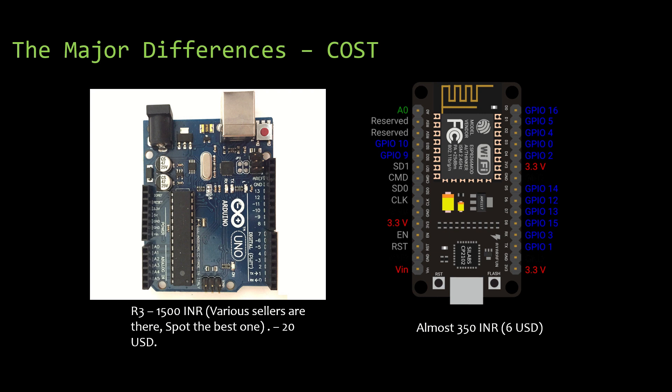The final difference is with respect to cost. For original Arduino UNO boards you will have to spend at least 1500 rupees, which is equivalent to about 20 USD. There are also cheaper duplicate versions available. When you go with NodeMCU you can buy it for 350 to 400 rupees, approximately 6 to 7 dollars.